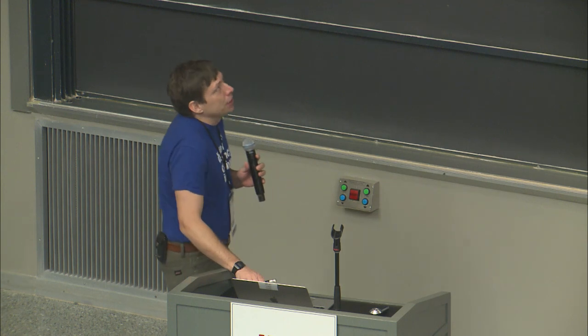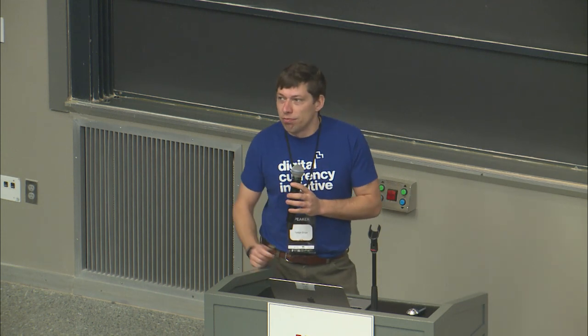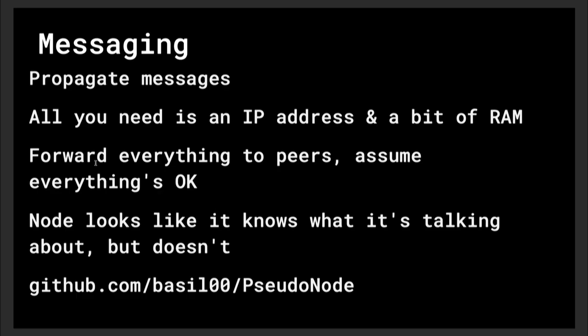Propagate messages: all you really need is an IP address and a little bit of RAM. It's actually really easy to receive a message and send it on to someone else. Do some DNS requests, find some other nodes, talk to them. There's a wire protocol, there's handshakes. I programmed an implementation that would do it — it's not that bad.